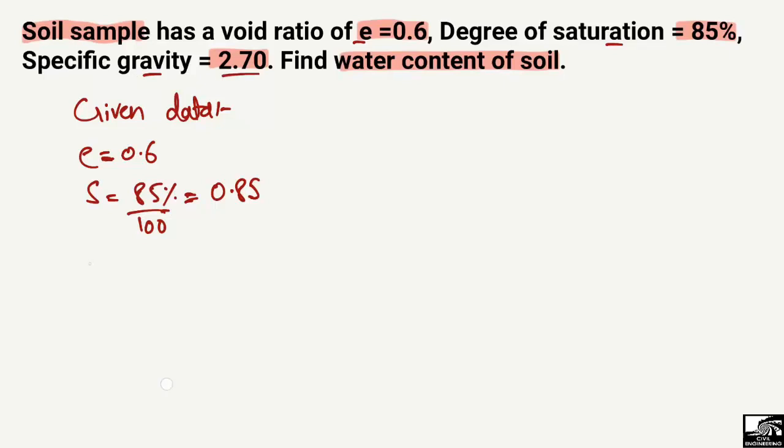The specific gravity of the soil sample is also given to us, represented by Gs, and it equals 2.70. We are asked to find the water content, so water content w is unknown to us.